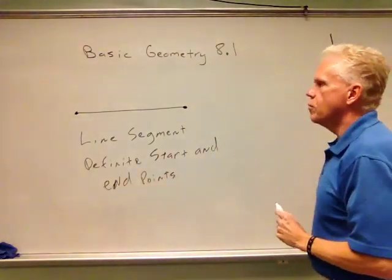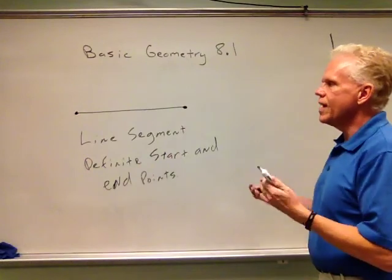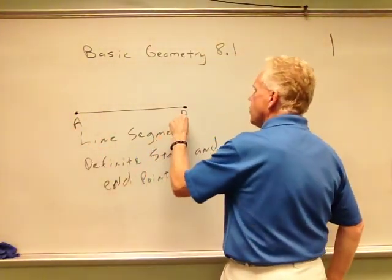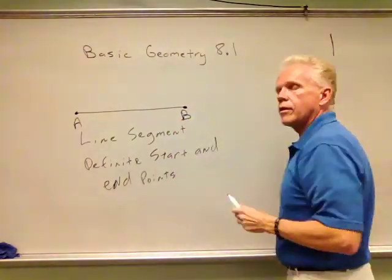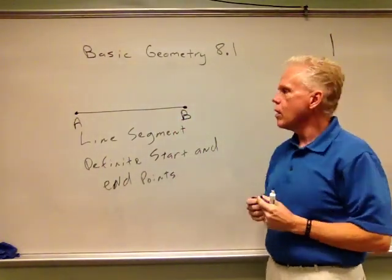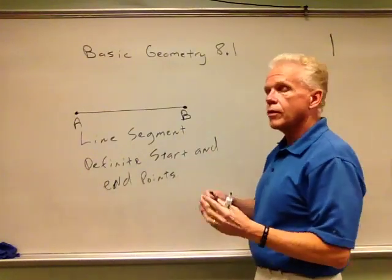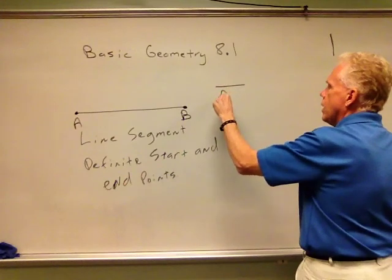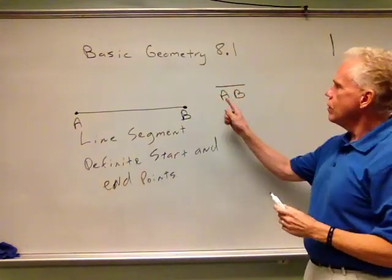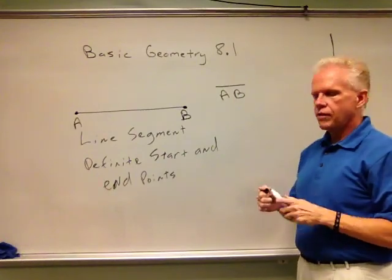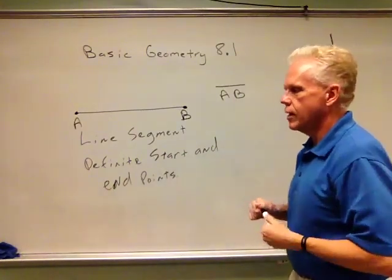We can certainly label that line segment just the way we've labeled the others, AB. We can actually label it with any set of letters we want. We can call it XY or ST or QR. When we label that AB, notice here we have no arrow on either end, so that tells me we're talking about line segment AB.